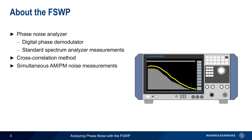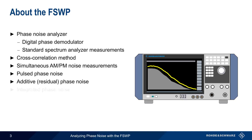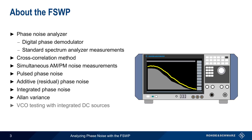In addition, the FSWP can make simultaneous but separate measurements of amplitude and phase noise, can measure phase noise on pulse signals, and can measure additive or residual phase noise using an internal or external source. Additional phase noise-related features include integrated phase noise measurements, Allan variance, and VCO testing using integrated DC sources. In this presentation, we'll focus on standard phase noise measurements, but separate presentations are available on many of these other topics.